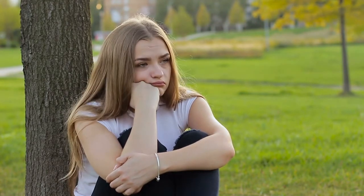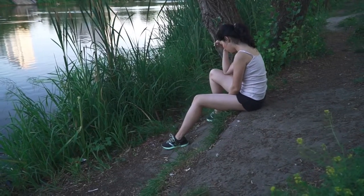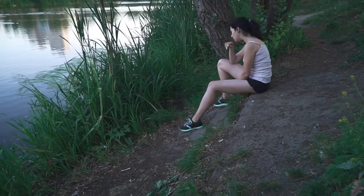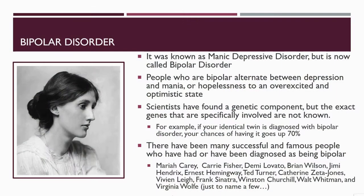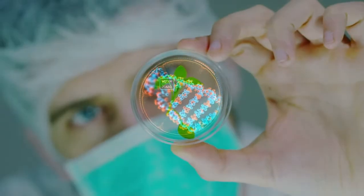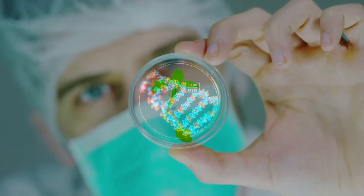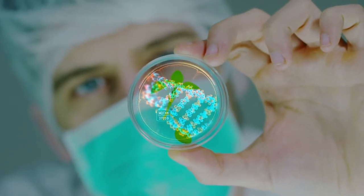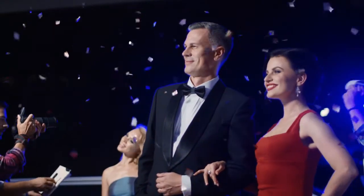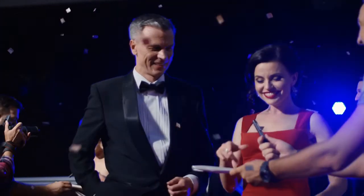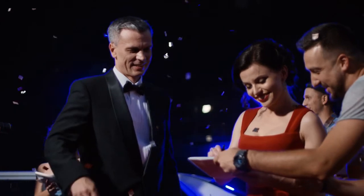Bipolar disorder, formerly known as manic depressive disorder, involves alternating between depression and mania — between hopelessness and an over-excited or optimistic state. Scientists have found a genetic component, though the exact genes are not known. For example, if you have an identical twin diagnosed with bipolar disorder, your chances of having it increase by seventy percent. Many successful and famous people have been diagnosed with bipolar disorder, including Mariah Carey, Carrie Fisher, Demi Lovato, Brian Wilson, Jimi Hendrix, Ernest Hemingway, Ted Turner, Catherine Zeta-Jones, Vivien Leigh, Frank Sinatra, Winston Churchill, Walt Whitman, and Virginia Woolf.